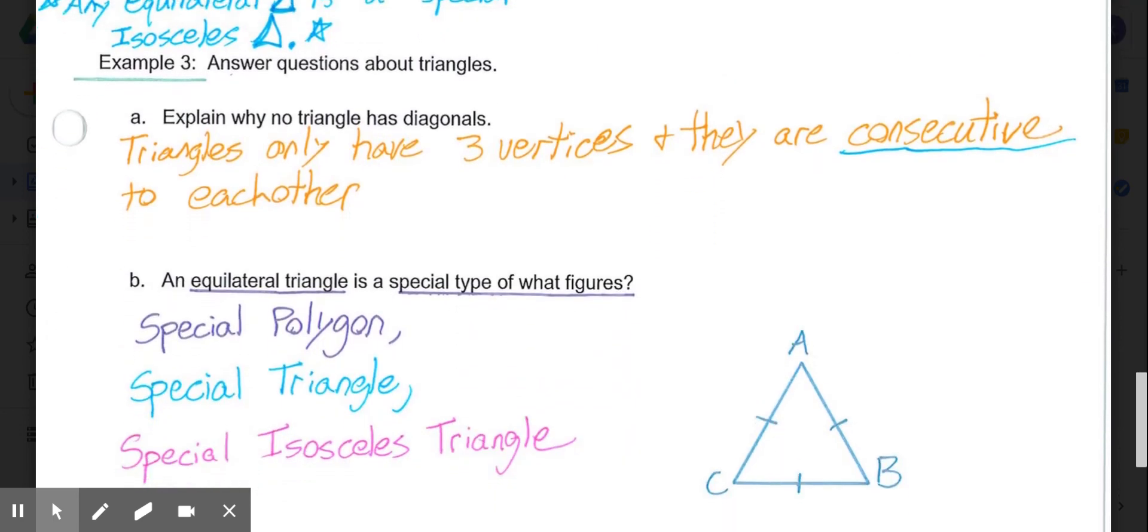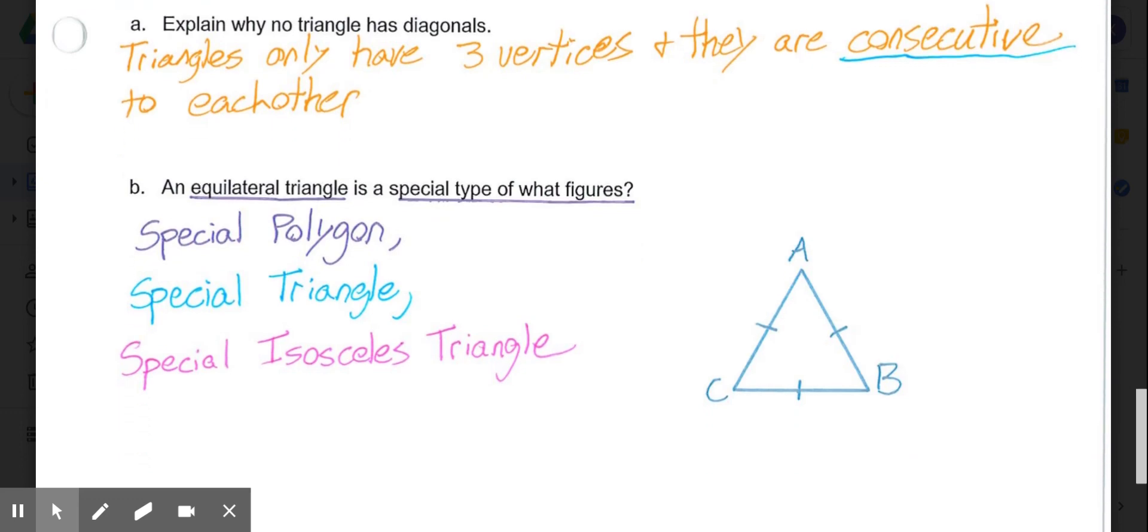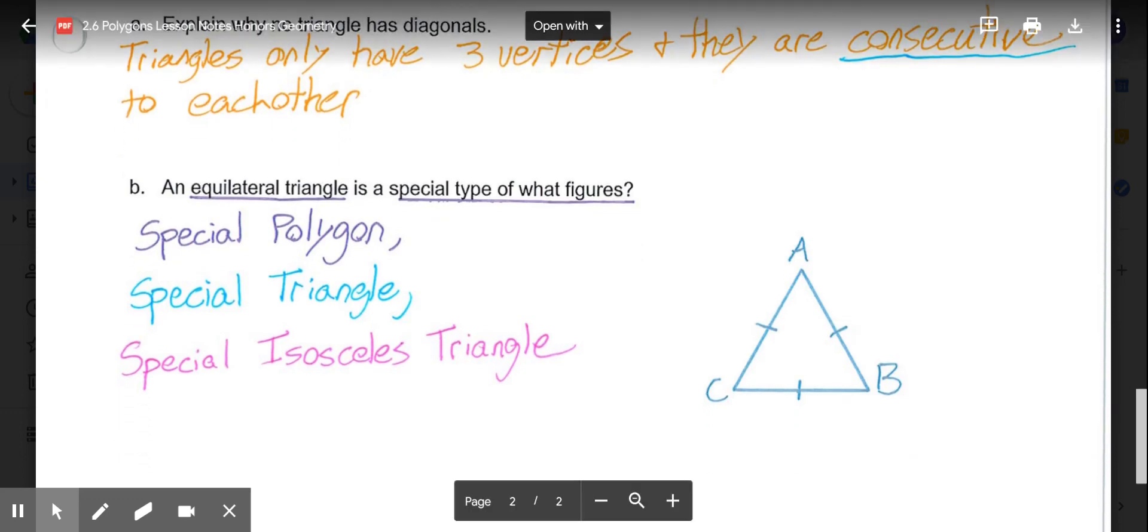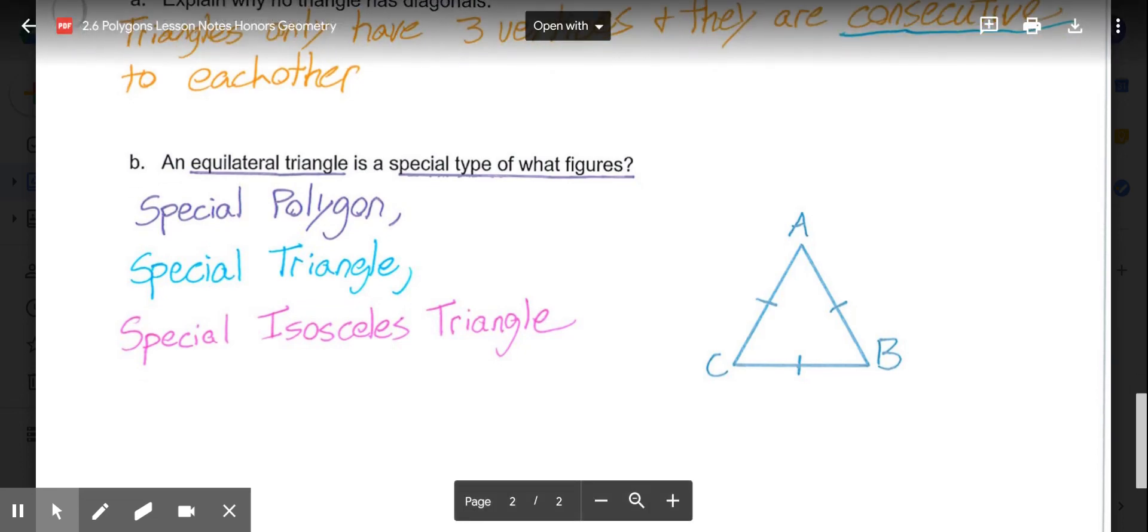And then, example three asks us to answer the following questions about triangles. Explain why no triangle has diagonals. Well, triangles only have three vertices, and all the vertices are consecutive to each other. A diagonal could not exist, because we don't have non-consecutive vertices. And then, in B, an equilateral triangle is a special type of what figures? First off, an equilateral triangle would be considered a special type of polygon. Then, it's also a special type of triangle. And even more specifically, it's a special type of isosceles triangle.